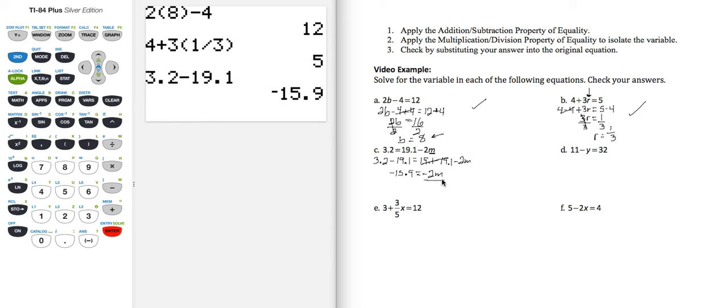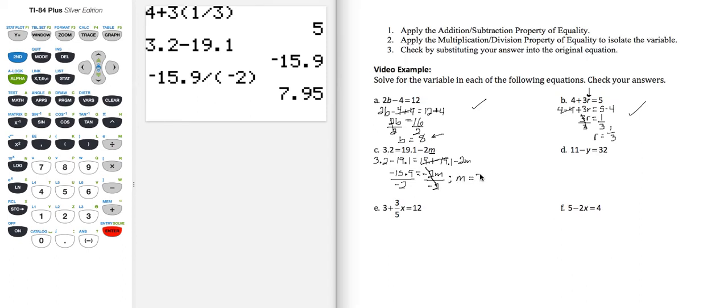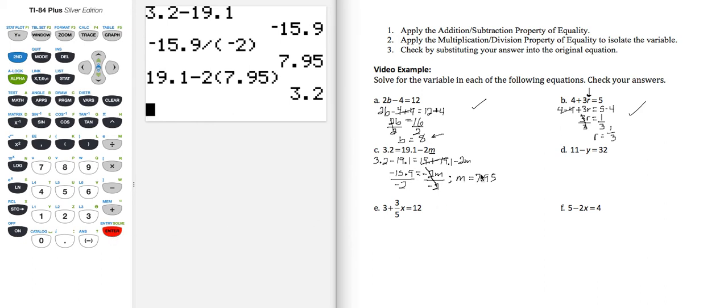I want M by itself, so I'm going to divide both sides by negative 2. That means on the right, negative 2 divided by negative 2 becomes 1. So I have negative 15.9 divided by, and I'm going to put this negative 2 in parentheses. That gives me positive 7.95 as the value for M. Let's plug that into the right-hand side and see if we get 3.2. So I have 19.1 minus 2 parentheses 7.95. Enter gives me 3.2, meaning M equals 7.95 checks.